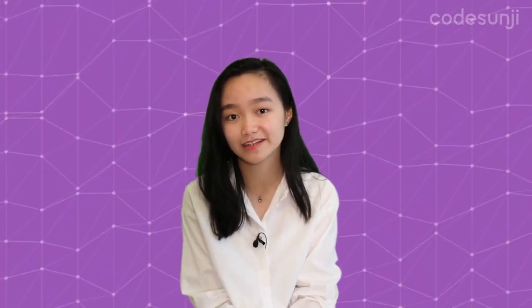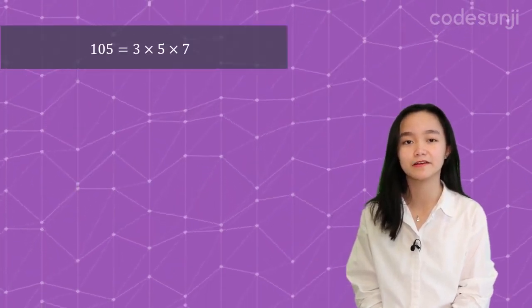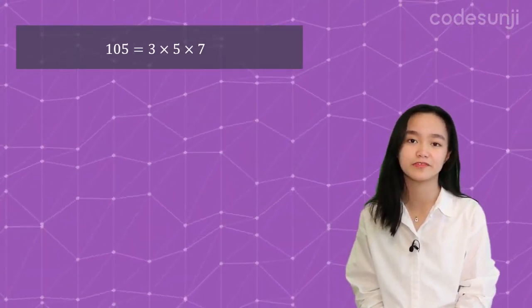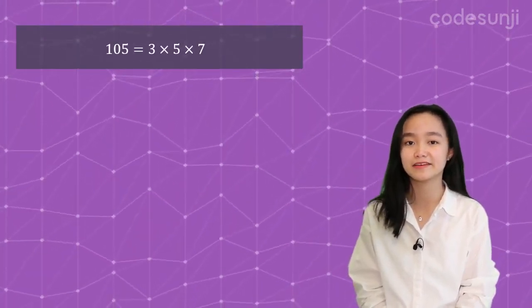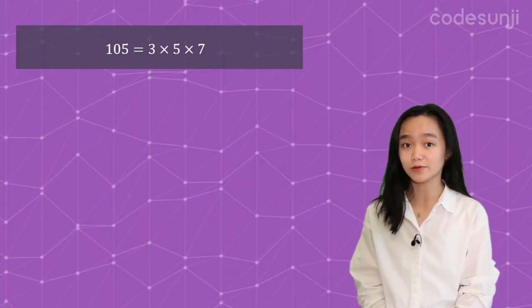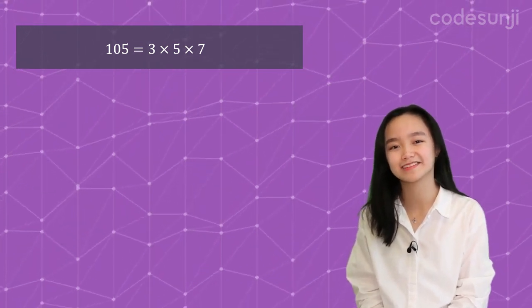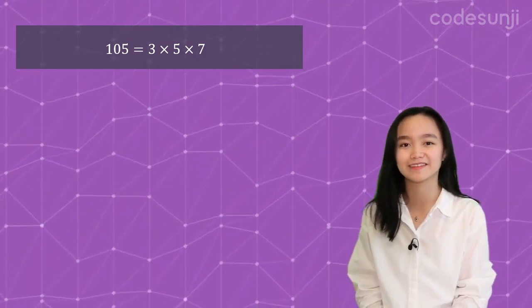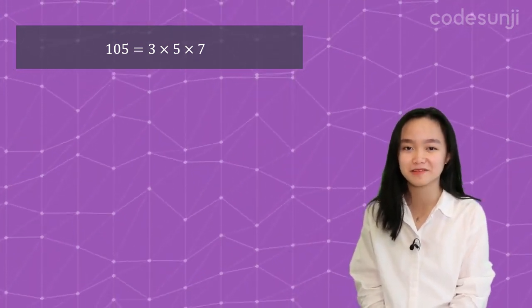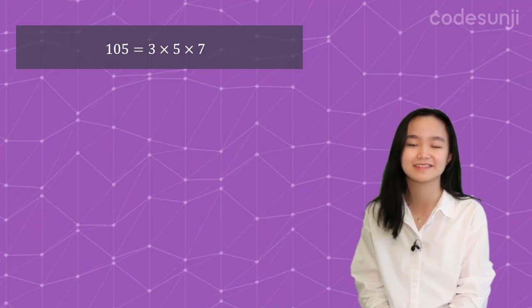Surely we can do better, and to do that we're going to need some help from the field of combinatorics. The prime factors of 105 are 3, 5, and 7. Do note that the given numbers are not necessarily the same as the prime factors — it just happened to be in this case.